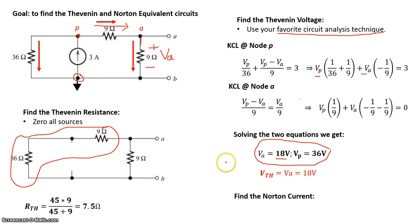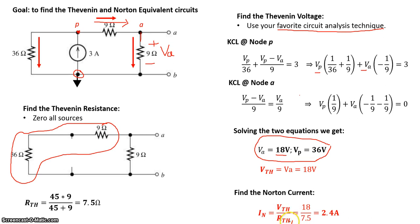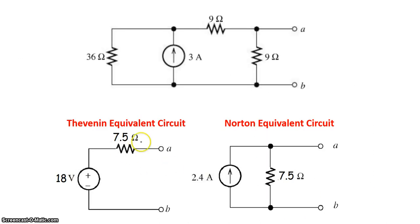So Thevenin voltage is VA because that's what is seen from the source. Now for the Norton current, it's basically the Thevenin voltage divided by the Thevenin resistance, so we get IN equals VTH divided by RTH, and that gives us 2.4 amps. So here's our Thevenin equivalent circuit with 18 volt source, 7.5 ohms as seen from terminal AB. So if I'm looking this way, it can be approximated as an 18 volt source with a 7.5 ohm resistor in series, or as a Norton equivalent circuit, which basically means a 2.4 amp current source in parallel to a 7.5 ohm resistance.